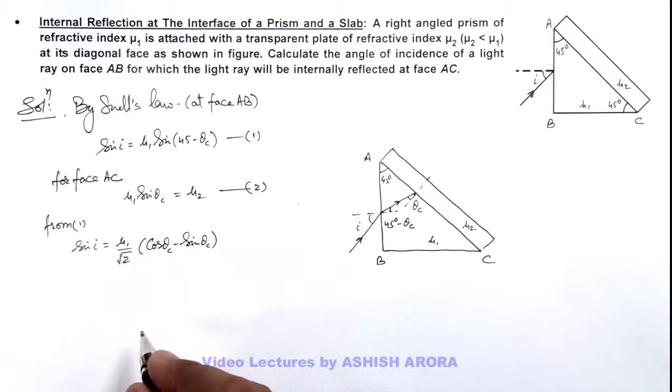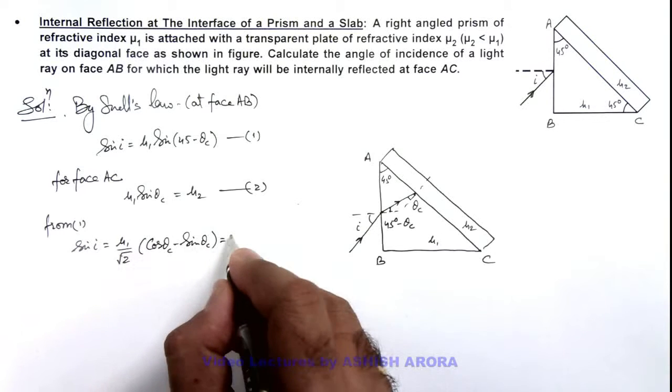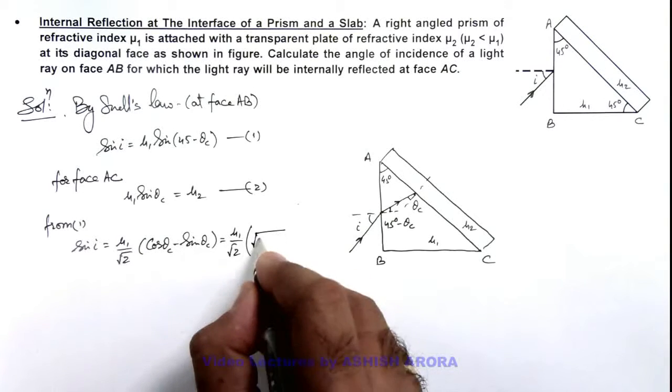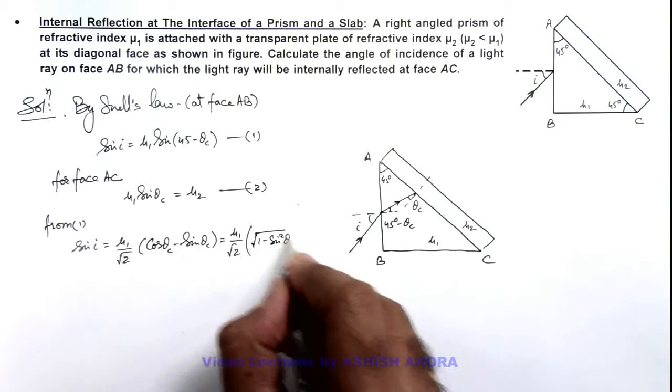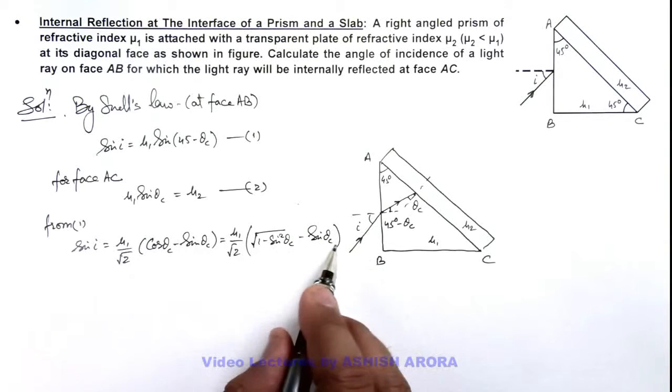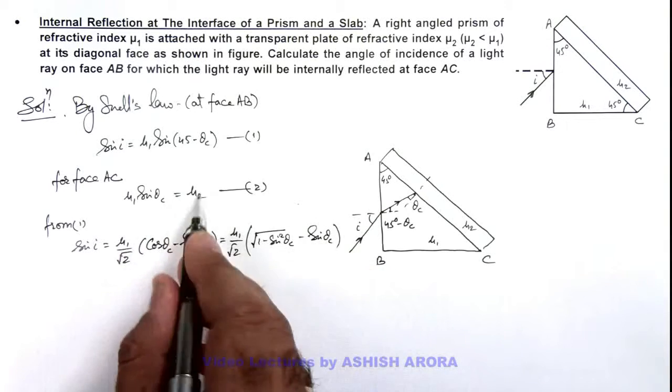In this situation we can further write it as (μ₁/√2), and cos θc we can write as √(1 - sin² θc) minus sin θc. And the value of sin θc we can substitute from here, that is μ₂/μ₁.